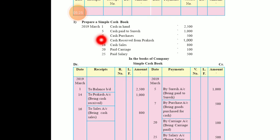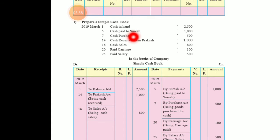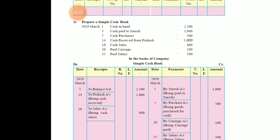Next, March 7 — cash purchase 500. When you make a purchase, cash is going out of the business. So it will be written on the payment side. March 7: 'By purchase account — 500'. Narration: 'Being goods purchased for cash'. The journal entry is: purchase account debit, cash account credit — so in the cash book it appears as 'Cash account by purchases account'.